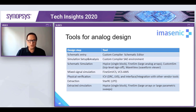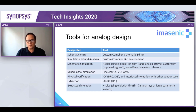Now let's talk about the specific tools we've used. For schematic entry we use the Custom Compiler schematic editor. For simulation setup and data analysis we use SAE, which is also part of the Custom Compiler environment. For schematic simulation we use HSPICE for smaller blocks — it's a well-known golden simulator for some foundries. For larger arrays we use FineSim, and for top-level sign-off we can also use CustomSim.